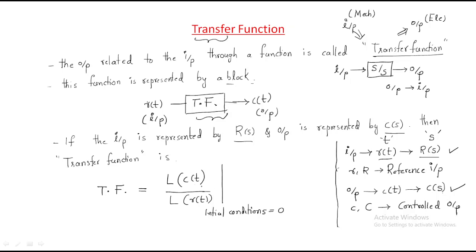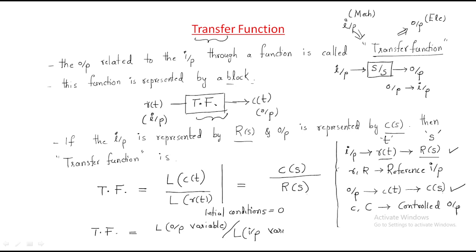Directly we can write: Laplace transform of c(t) becomes capital C(s), and Laplace transform of r(t) becomes capital R(s). Therefore, in words, the transfer function is the Laplace transform of the output variable divided by the Laplace transform of the input variable. Initially we take the system in the time domain, then convert it into the frequency domain — frequency domain of output divided by frequency domain of input.